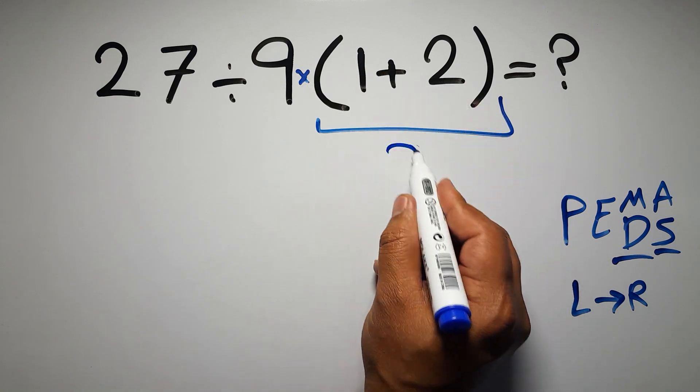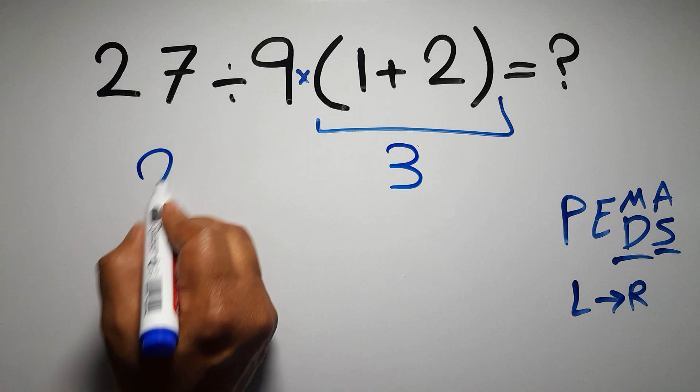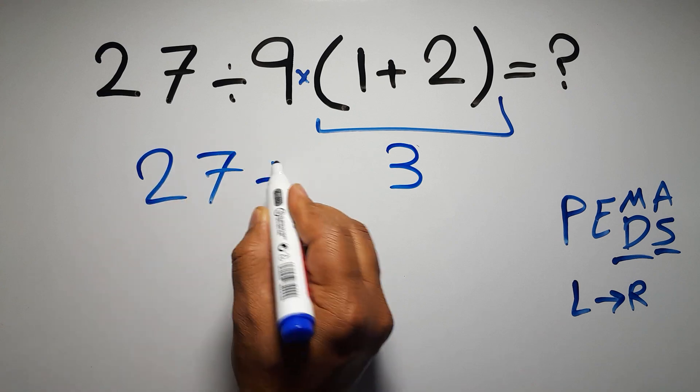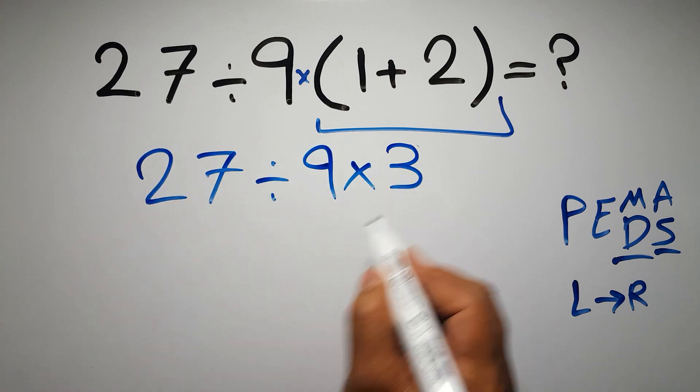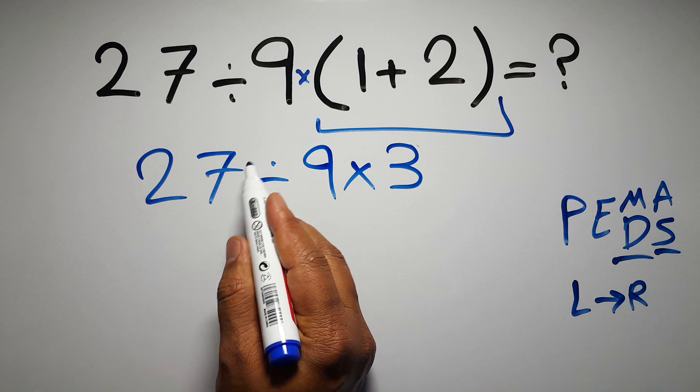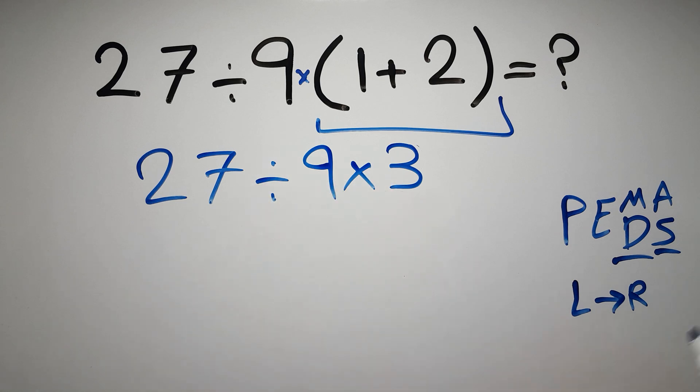Inside this parentheses we have 1 plus 2, which equals 3. So we get 27 divided by 9 times 3. Now we have one division and one multiplication. As I said, multiplication and division have equal priority and we have to work from left to right. So here, first we do this division, then this multiplication.